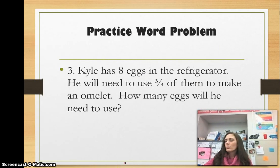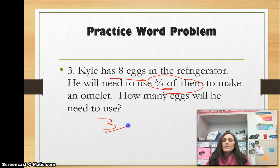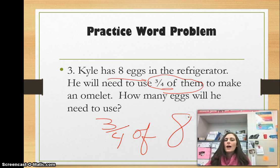Here's our practice word problem. Kyle has eight eggs. I'm going to mark that information in the refrigerator. He will need to use three-fourths of them to make an omelet. How many eggs will he need to use? So I see three-fourths of eight is how many he's going to need to use. So how many eggs will that be then? What is three-fourths of eight?